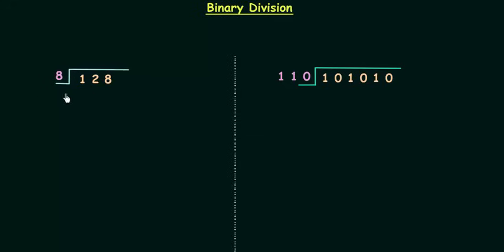We want to divide 128 by 8 so this 128 is our dividend and this 8 is our divisor. We will start our division from the left most digit and in this case we have 1 as the left most digit. 1 is smaller than 8 so quotient is 0.